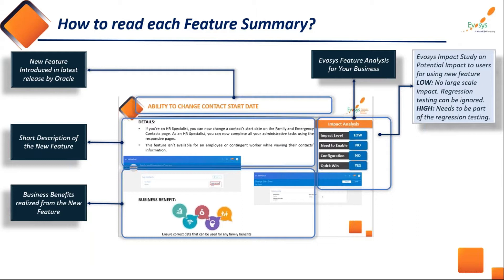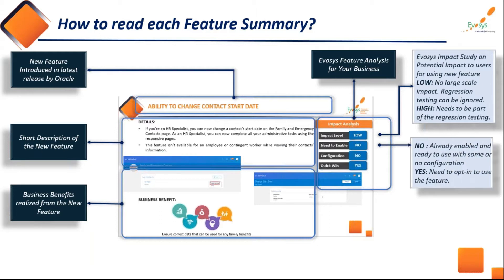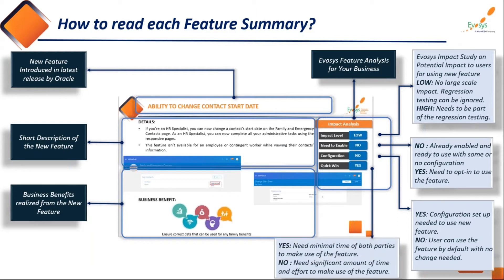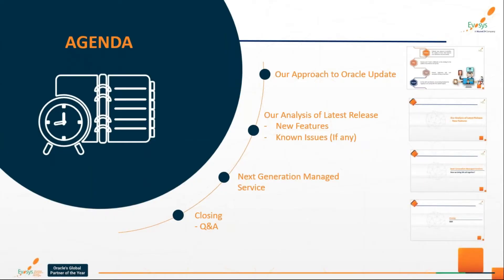A low impact level means no large-scale impact, so regression testing isn't really required or only a light amount is needed. A high impact level would be the complete opposite. We also inform you whether the update will just appear or whether you need to enable that feature, and whether the update requires any configuration — clearly an update that needs configuration needs more planning time. Finally, we've added a quick win gauge, which takes into account the level of effort and time required to get this feature set up.